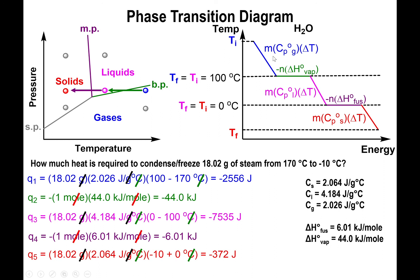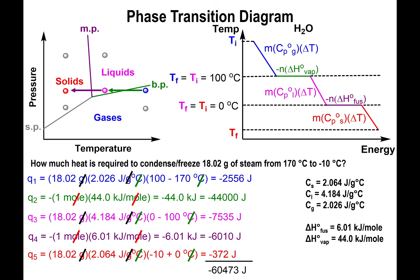The key principle: if you're going down in temperature, everything must be negative; if you're going up, everything must be positive. You'll never have a mix of positive and negative values — either all five are negative or all five are positive. This is one reason the negative sign is necessary. Convert any kilojoule values to joules by multiplying by 1000, then add all five values together to get the total heat.